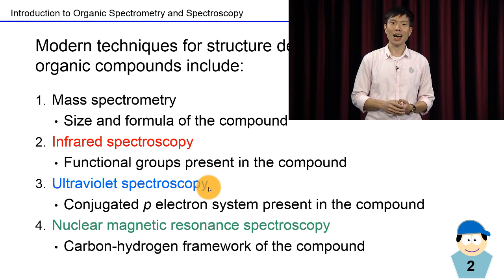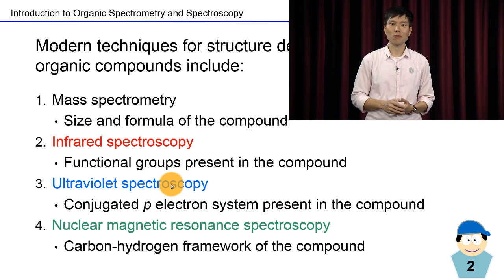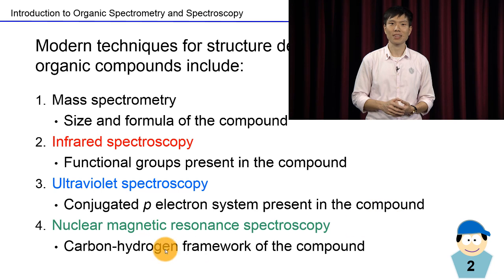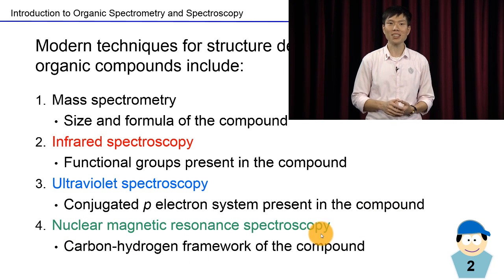Number three, ultraviolet spectroscopy, which lets us determine the conjugated pi electron system present in the compound. And lastly, number four, nuclear magnetic resonance spectroscopy, also known as NMR, which demonstrates the carbon-hydrogen framework of the compound.